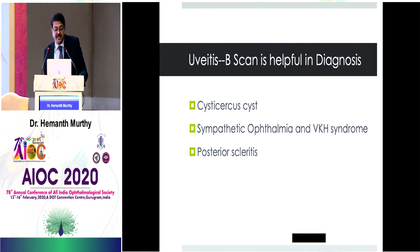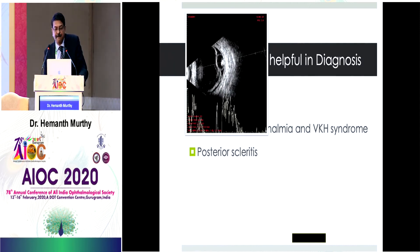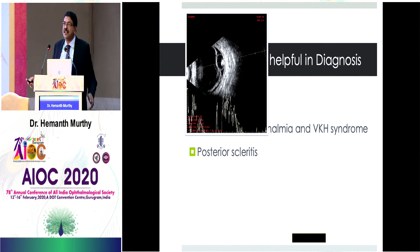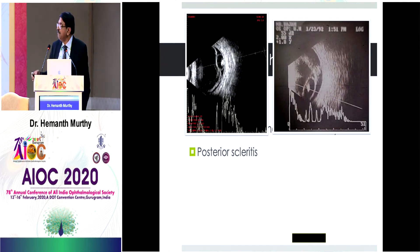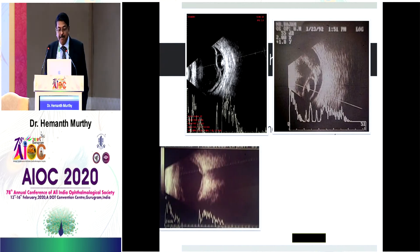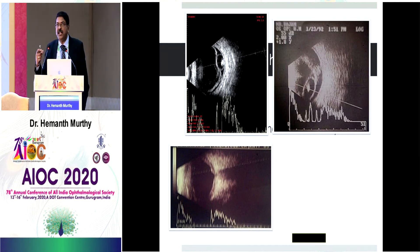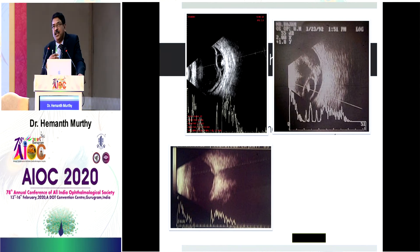Another important condition is uveitis. It is very important in sympathetic ophthalmia, VKH syndrome, and posterior scleritis. This is a patient of cysticercosis — a cyst with a subretinal cyst showing a central scolex of high reflectivity spike. In general uveitis, the uvea is thickened uniformly across periphery and posterior pole. This patient has thickened choroid only near the posterior pole and not at the periphery.